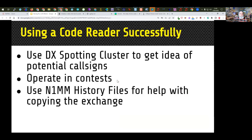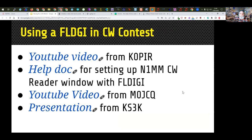Use a DX spotting cluster to get an idea of potential call signs when operating contests. Use the N1MM history files for help with copying the exchange if you're interested in it, but don't count on it being exactly right — you need to still listen and figure out what they're sending. For using FL Digi in a contest, there's a YouTube video from K0PIR, a help doc for setting up N1MM interface with FL Digi, a YouTube from M0JCQ, and a presentation from KS3K. You can use FL Digi and operate it in a contest.